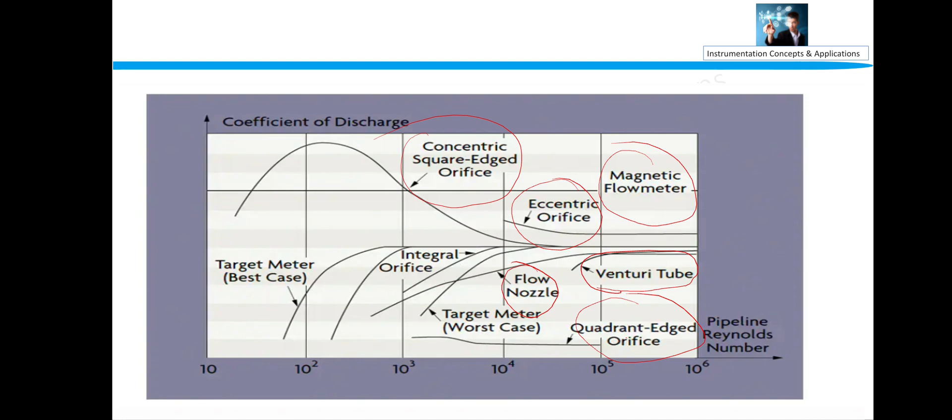And if the Reynolds number is less and coefficient of discharge is very high, then integral orifice should be preferred. And like this, we actually decide which type of orifice should be used. So this is the relation between coefficient of discharge. This is a very important factor actually while deciding any type of orifice plate.